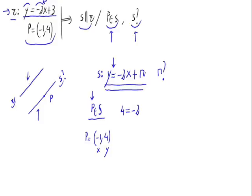So, substituting it, we will have 4 equals minus 2 times minus 1 plus N. And from here, we would have 4 equals 2 plus N, where N equals 4 minus 2. And operating this, N equals 2.